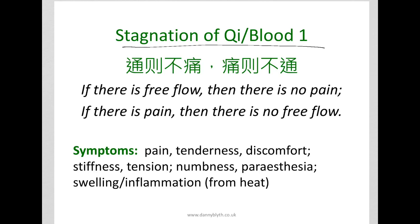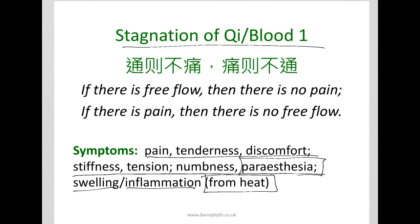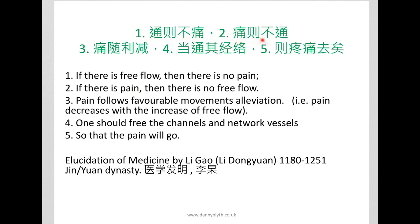First of all, qi and blood stagnation. We get pain, tenderness, discomfort, stiffness, tension, numbness, paraesthesia with strange sensations, swelling, and inflammation from heat. Where there's stagnation the next thing is always heat. Once again: free flow then there's no pain, and pain then there's no free flow. Adding to this, it says that pain decreases with the increase of free flow, and one should free up the channels and vessels so that the pain will go away.